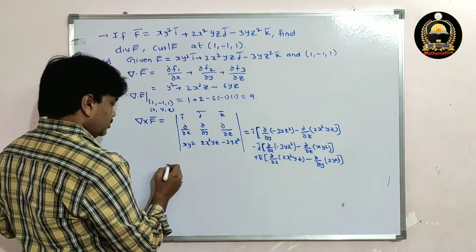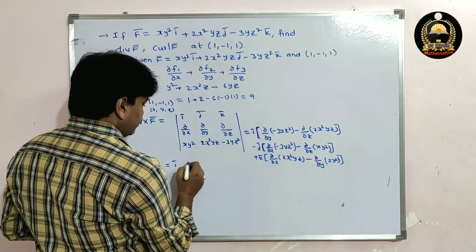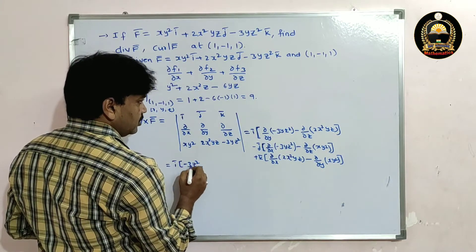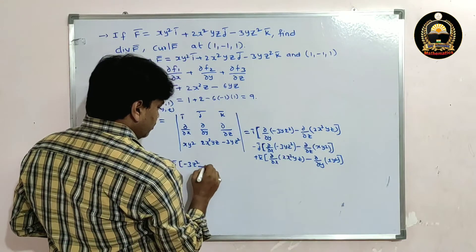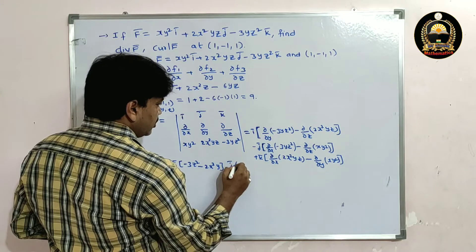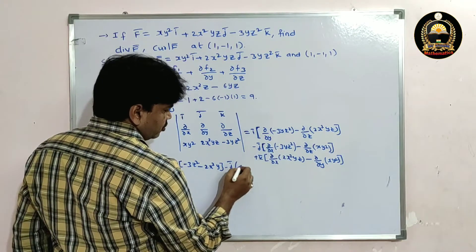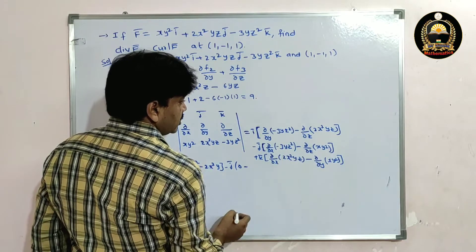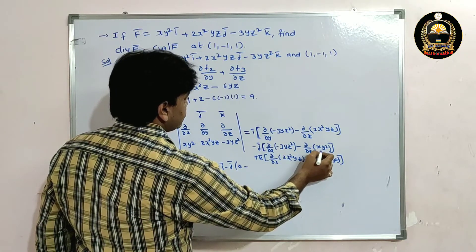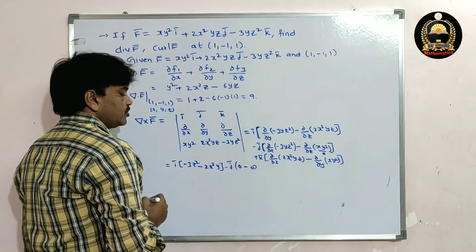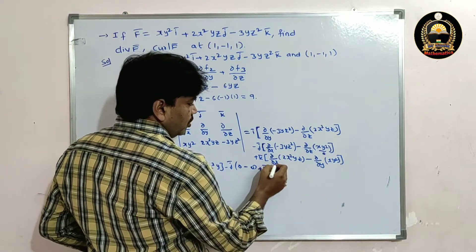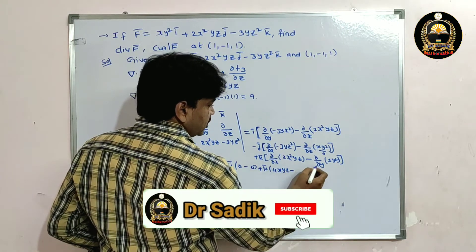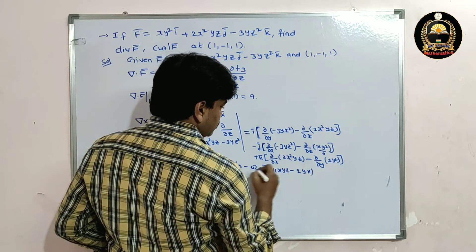Simplifying: ī into [∂/∂y of (-3yz²) = -3z², minus ∂/∂z of (2x²yz) = -2x²y]. Minus j̄ into [∂/∂x of (-3yz²) = 0, since no x term, minus ∂/∂z of (xy²) = 0, since no z term], so j̄ coefficient = 0. Plus k̄ into [∂/∂x of (2x²yz) = 4xyz, minus ∂/∂y of (xy²) = 2xy].